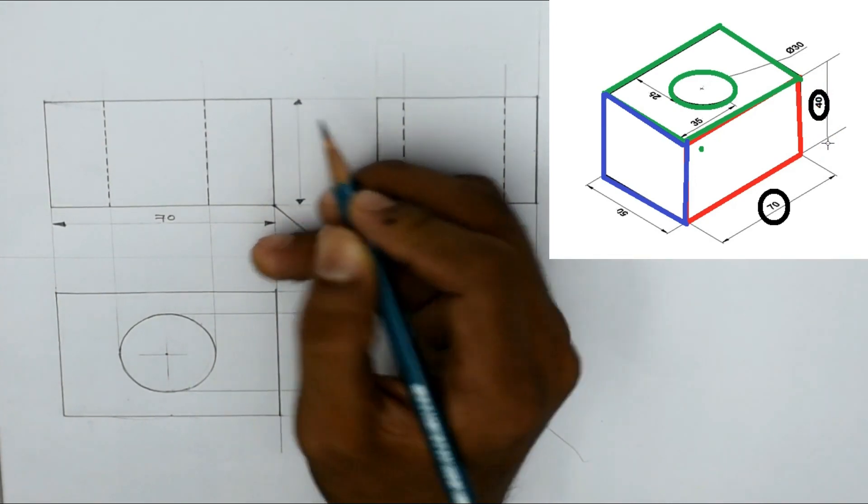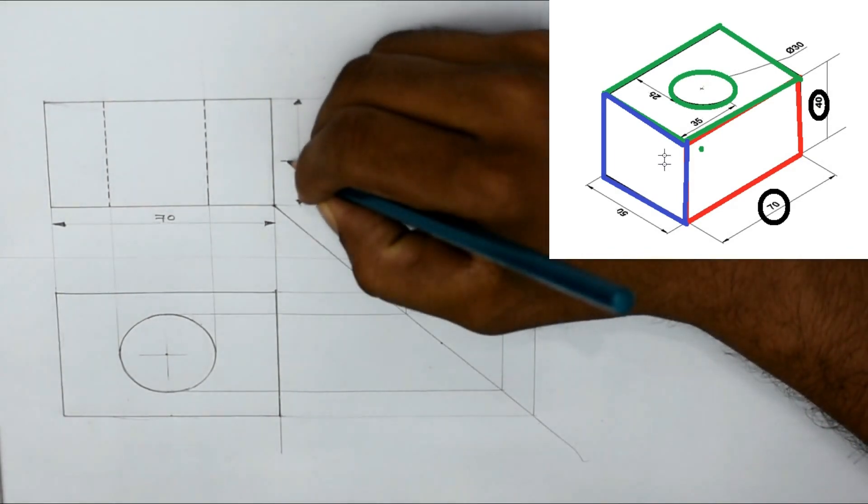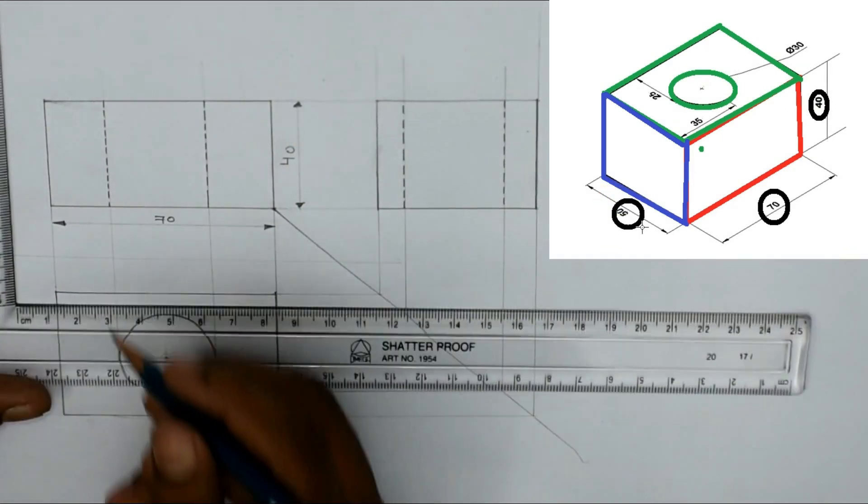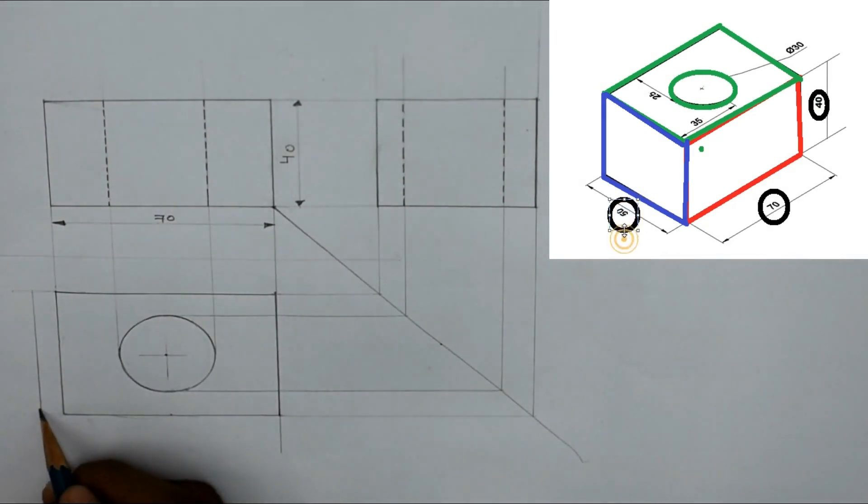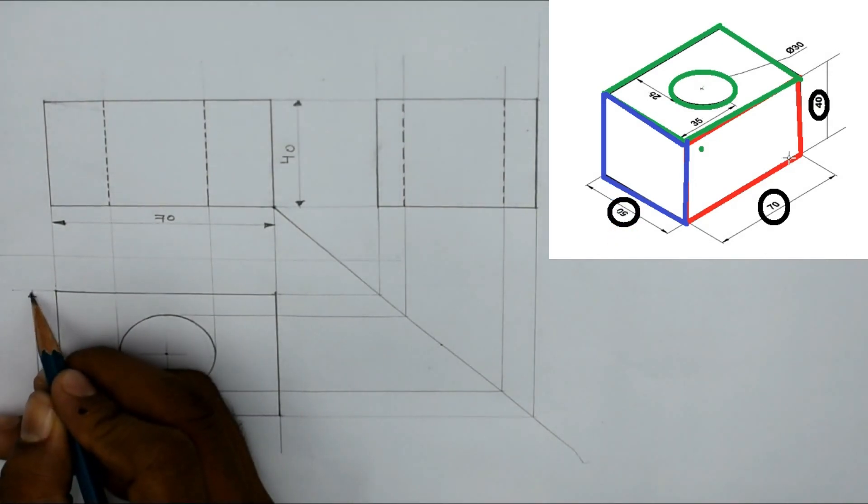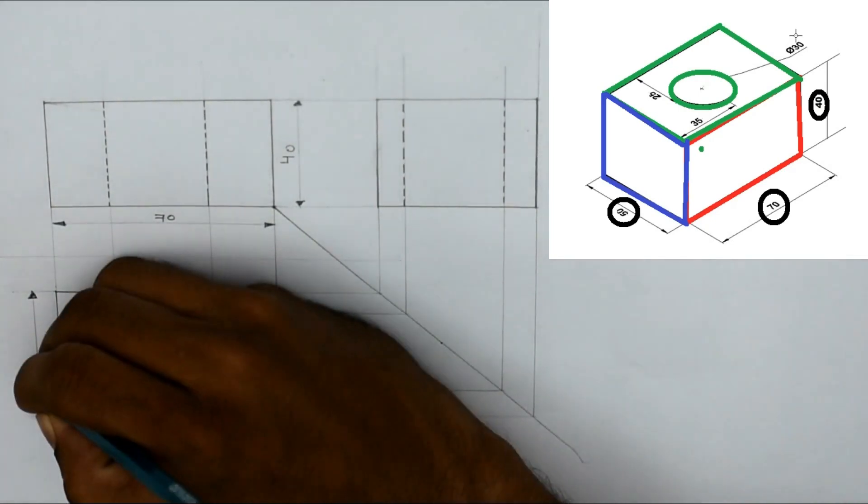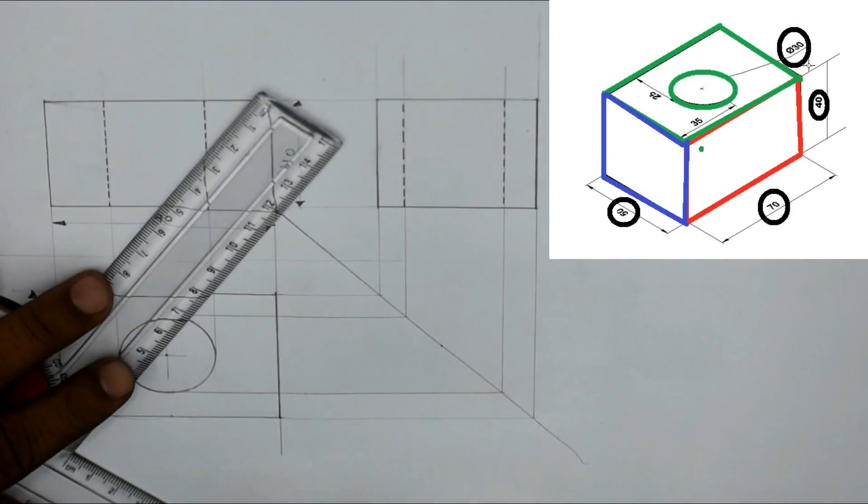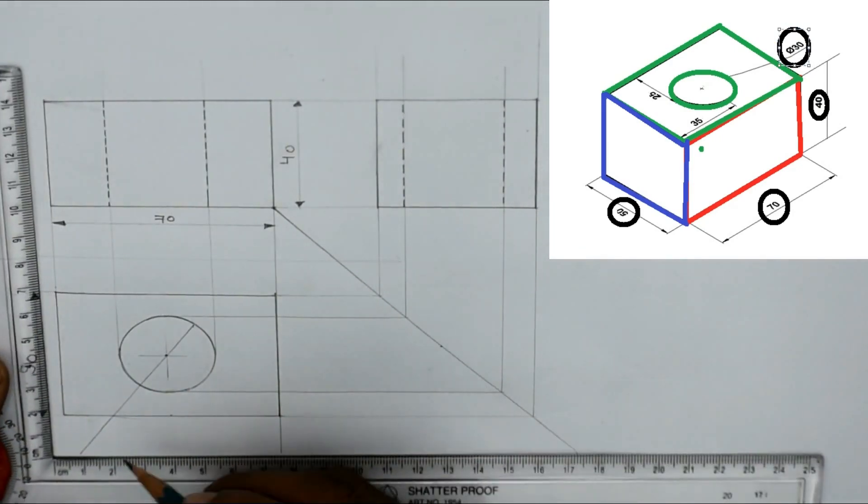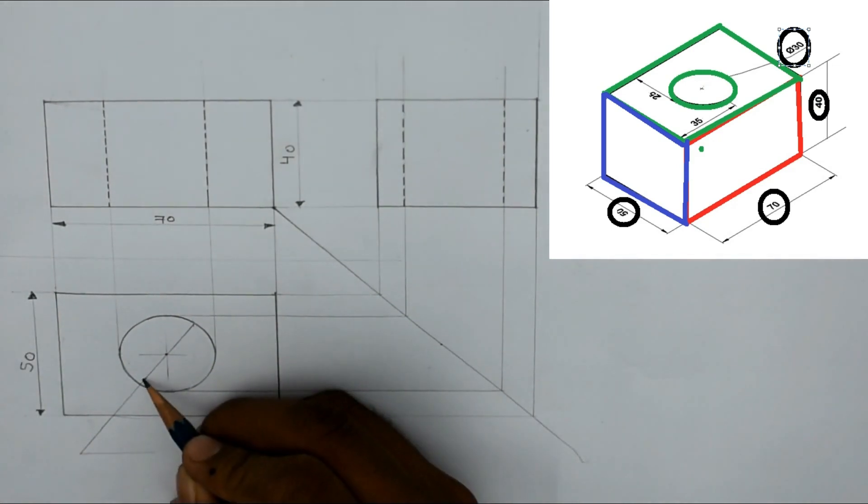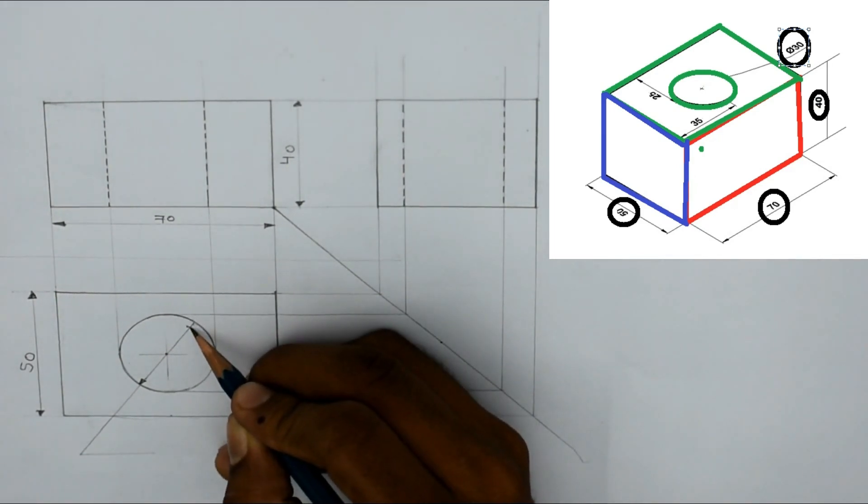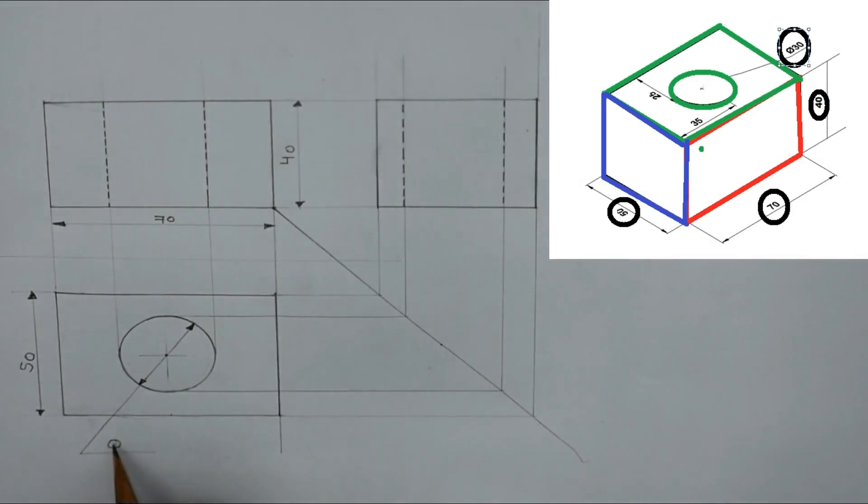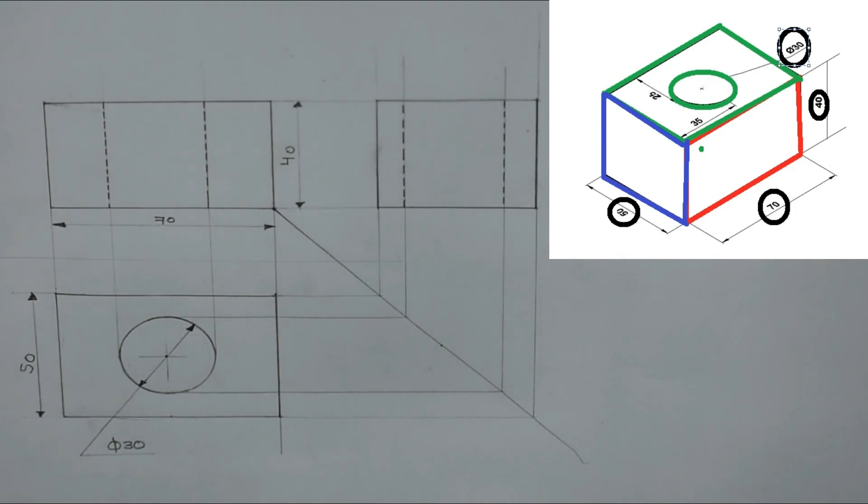Now I will dimension this figure. There are very few dimensions in this. This is 70 width and this height is 40, and the width of this figure is 50. So now we have to dimension the circular hole. We can either give the radius, and now here I am giving the diameter of this figure. As we have already known from the review section how to dimension the circular position, here I am mentioning the diameter symbol. So everything is completed. Now we have done the example problem number 5.